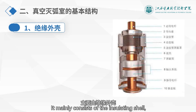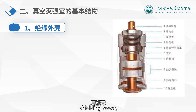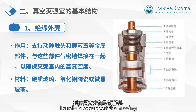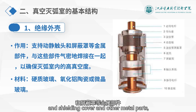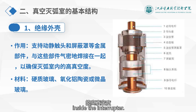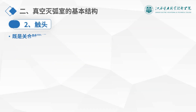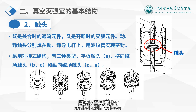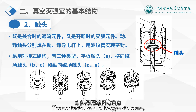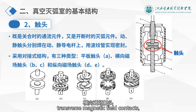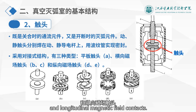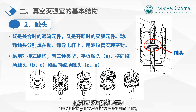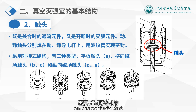The interrupter mainly consists of the insulating shell, moving and stationary contacts, shielding cover, and bellows. The insulating shell is both the vacuum container and the insulator between the contacts. Its role is to support the moving and stationary contacts, shielding cover, and other metal parts, and to ensure the high vacuum inside the interrupter. Contacts are the key components for switching the current. The moving and stationary contacts are welded to the moving and stationary conductive rods, sealed with bellows. The contacts use a butt-type structure — there are three types: flat contacts, transverse magnetic field contacts, and longitudinal magnetic field contacts. The common feature is using magnetic field forces to quickly move the vacuum arc, preventing hot spots on the contacts.